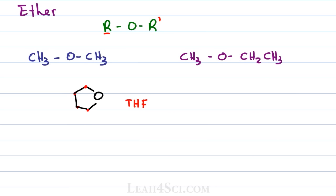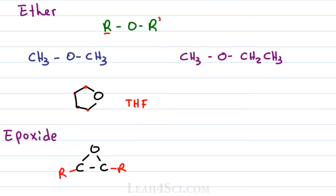One cyclic ether you must know is the epoxide. Epoxides are very reactive and come up a lot in organic chemistry. The epoxide is a three-membered ether: a three-atom ring made up of two carbons and one oxygen. You can have R groups or hydrogens coming off it, but the key is this small triangle of two carbons and one oxygen giving you an epoxide.